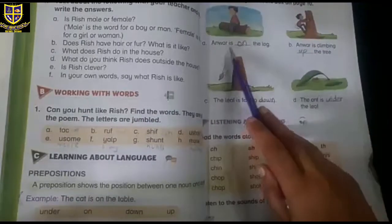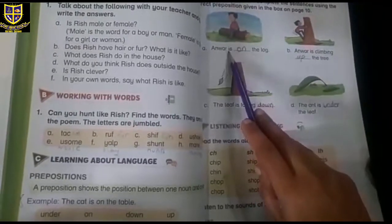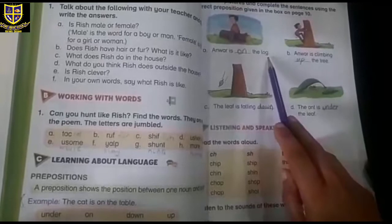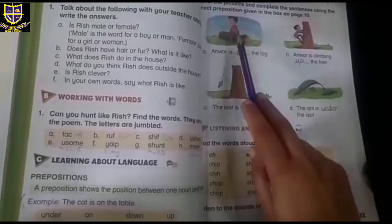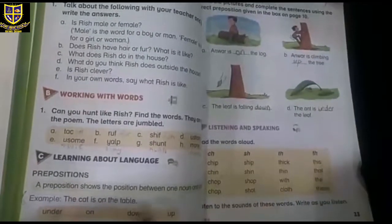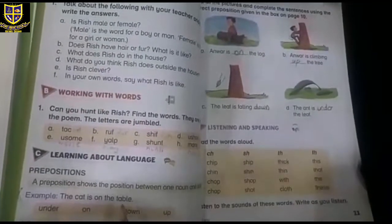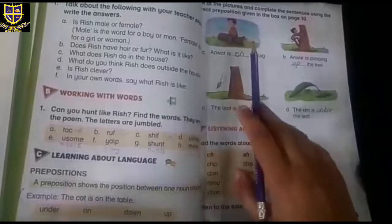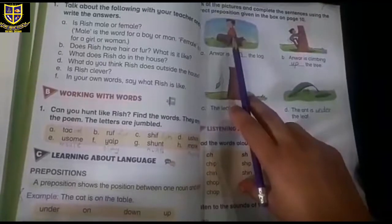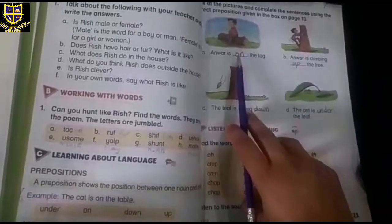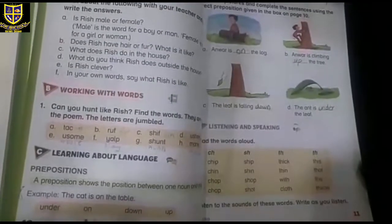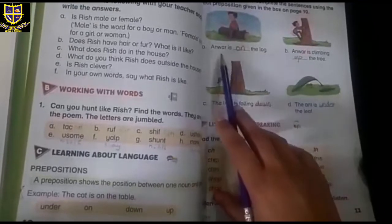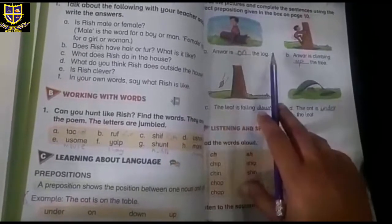out your pencils. First sentence is: Anwar is dash the log. This is a piece of log. Anwar is where on the log? Now you have to see which preposition is perfect here. On. He is sitting on top. When something is on top, which preposition do we use? On. So you have to write here: O-N, on. Anwar is on the log.